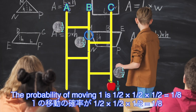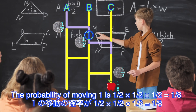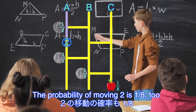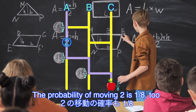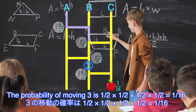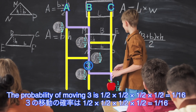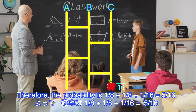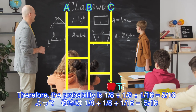Taro. The probability of moving one is half times half times half, equals one eighth. The probability of moving two is also one eighth. The probability of moving three is half times half times half, equals one sixteenth. Therefore, the probability is one eighth plus one eighth plus one sixteenth, equals five sixteenths.